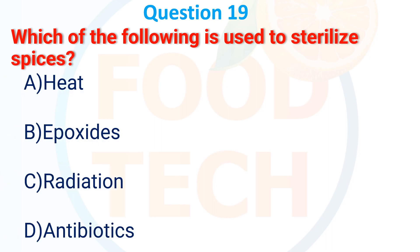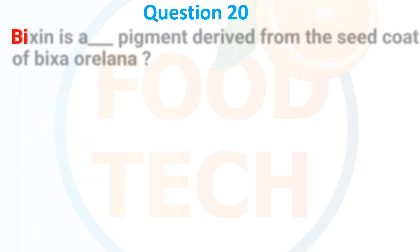Which of the following is used to sterilize spices? A. Heat, B. Epoxy, C. Radiation, D. Antibiotic. The answer is B. Epoxy.